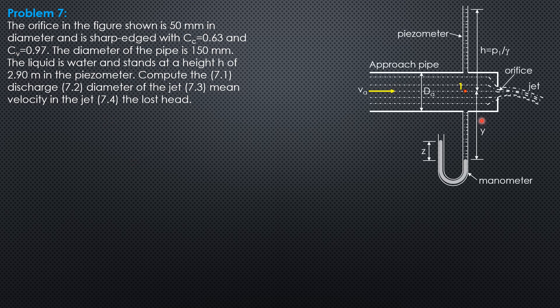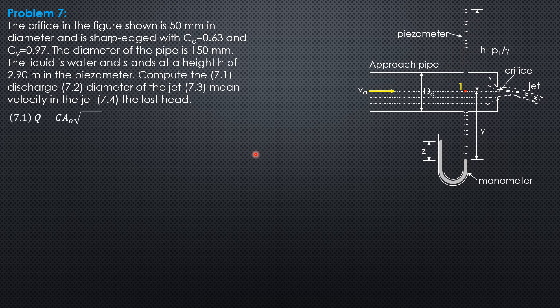This is the given figure. For the first question, Q equals CA√2gH, where C is the product of C_c and C_v. H is v₁²/2g plus small h. The downstream head is just 0 because the jet is exposed to the atmosphere. So H equals v₁²/2g plus h. Let's check if velocity head at 1 is really considerable.